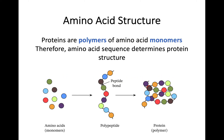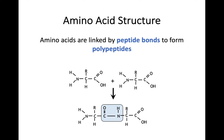When we talk about proteins being synthesized, you may remember from Higher that proteins are polymers of amino acid monomers. The amino acids are all linked together by a peptide bond into a polypeptide chain — that's what makes a protein — and therefore the amino acid sequence determines the structure of the protein that is synthesized.